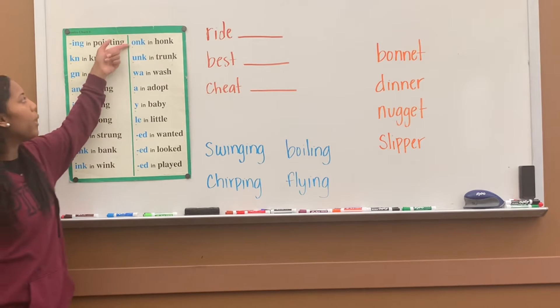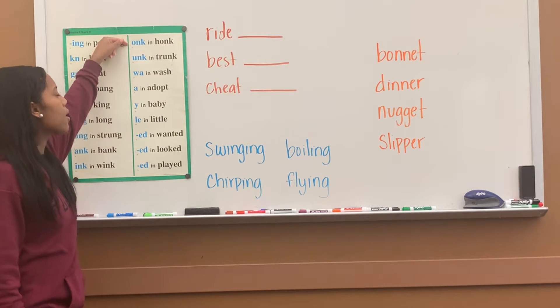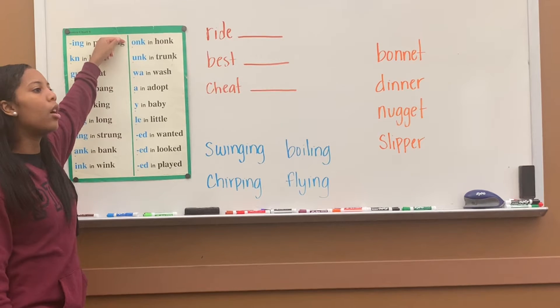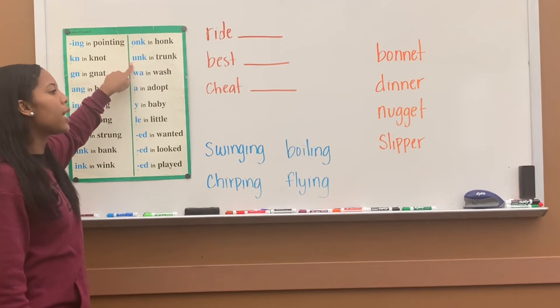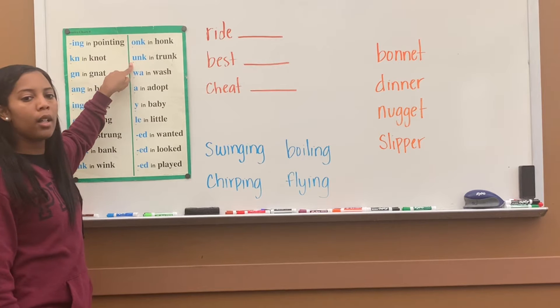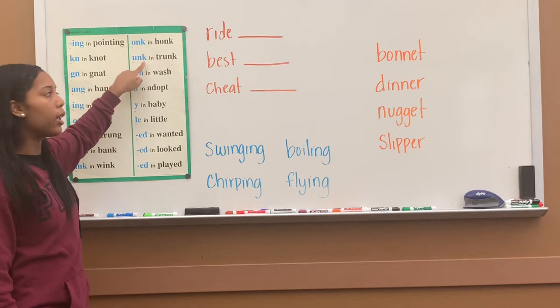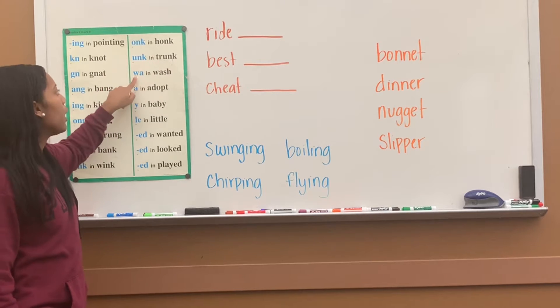O-N-K says 'ung' in 'honk'. U-N-K says 'ung' in 'trunk'.